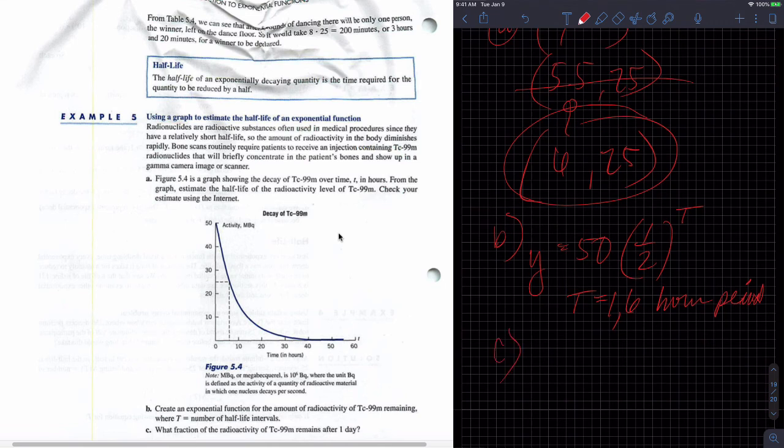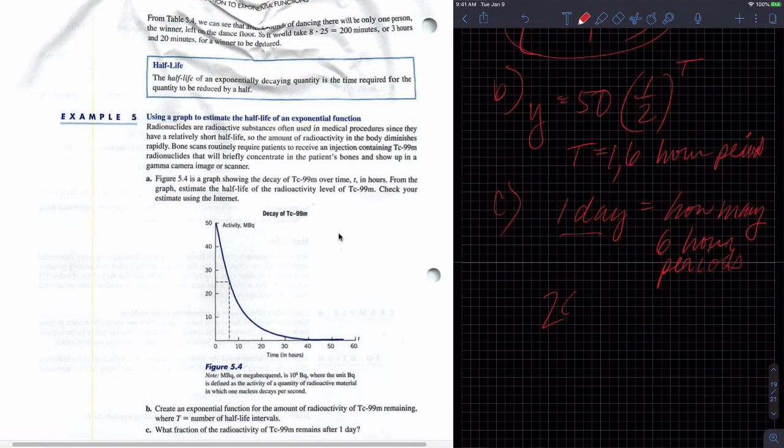And then part C, part C is asking what fraction of radioactivity of TC99M remain after one day. So that means we have to say one day is equal to how many 6 hour periods. So we have to sort of convert it, right?